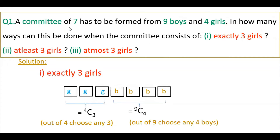Now, moving to the problem. Here, you have to select 7 committee members out of 9 boys and 4 girls. There are 3 conditions given, and for each condition you have to find the number of ways to select the committee members. The first condition is exactly 3 girls. Out of 7 committee members, exactly 3 girls should be there. If you select 3 girls, the remaining 7 minus 3 equals 4 boys. So, out of 4 girls you choose 3 girls — that is 4C3.